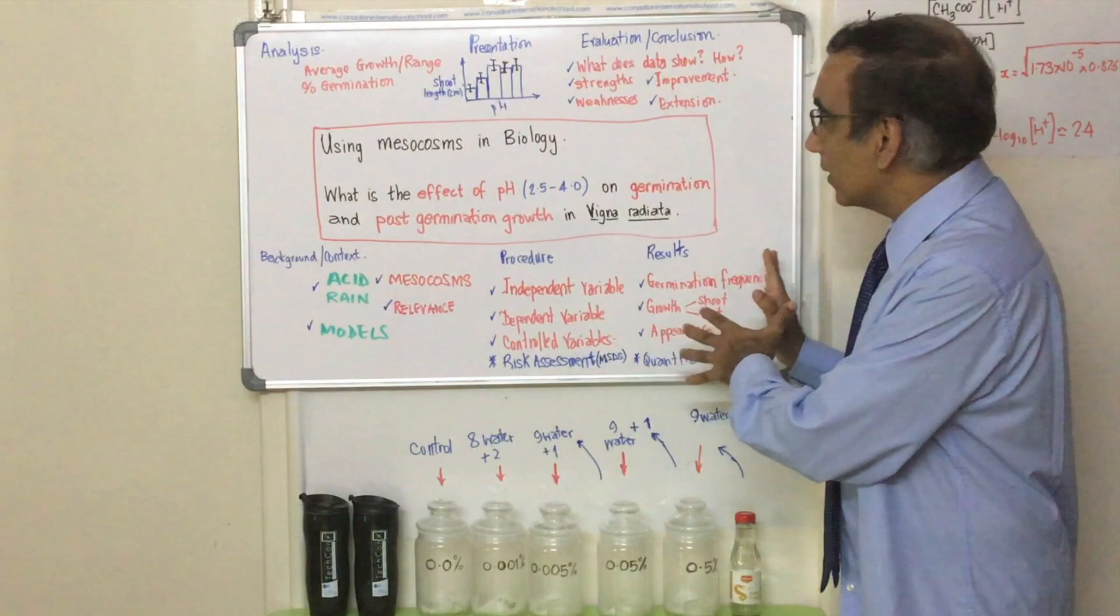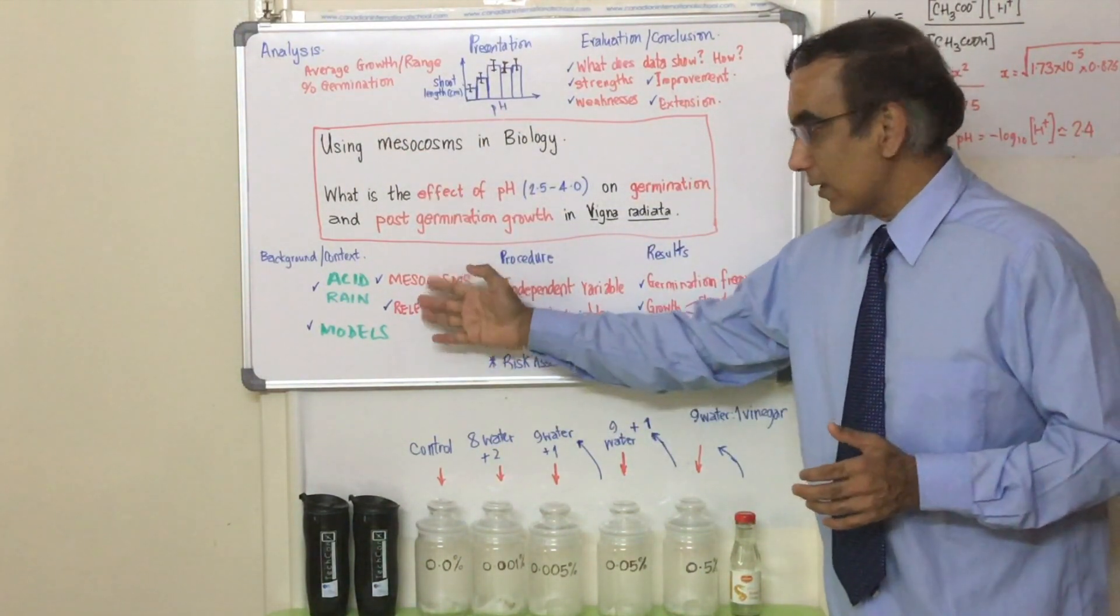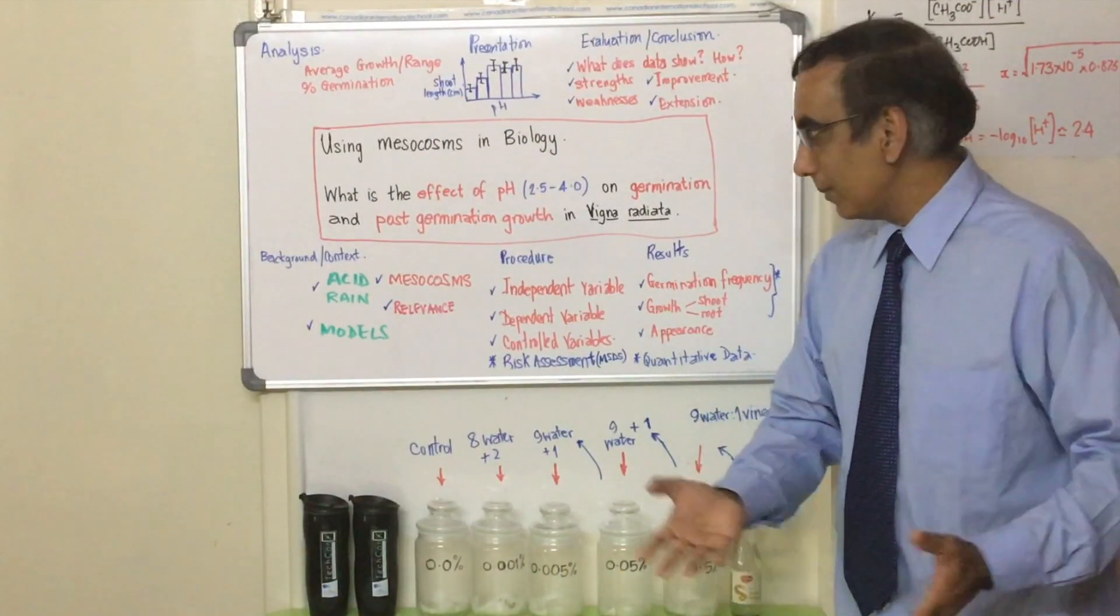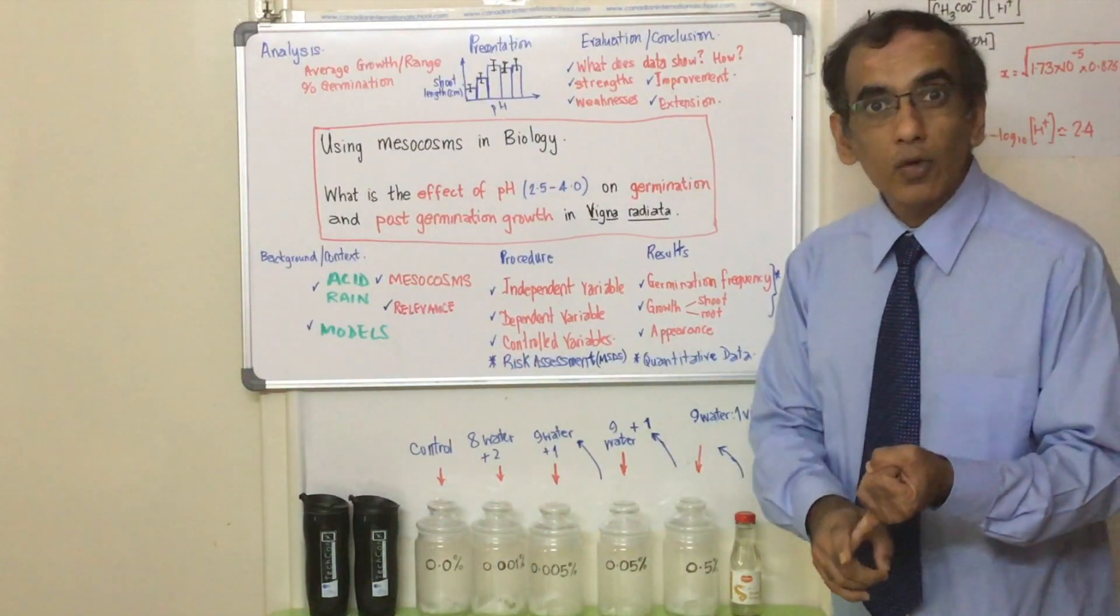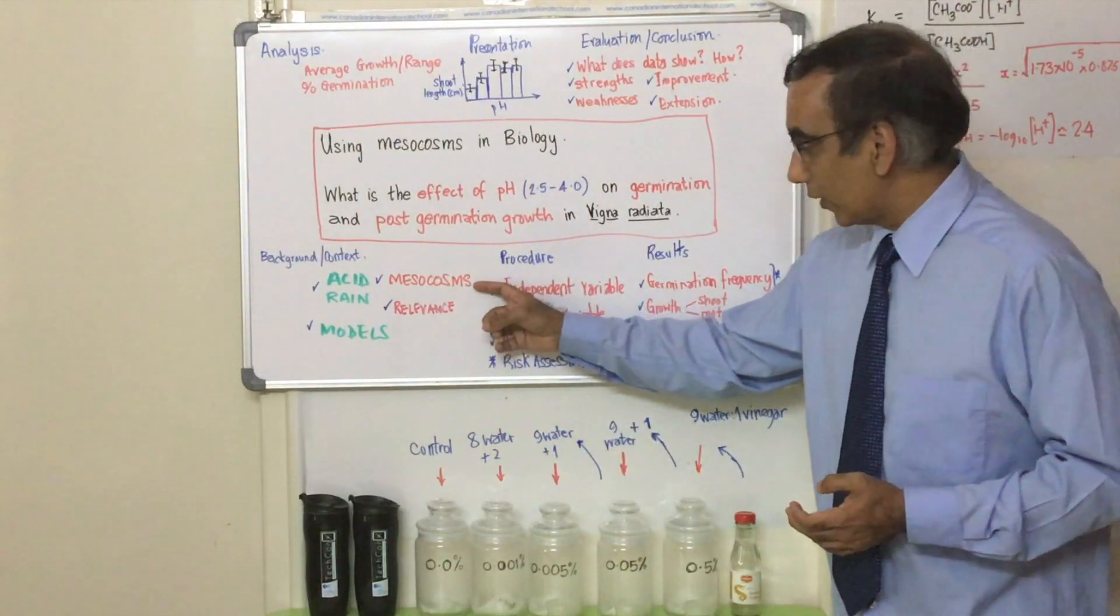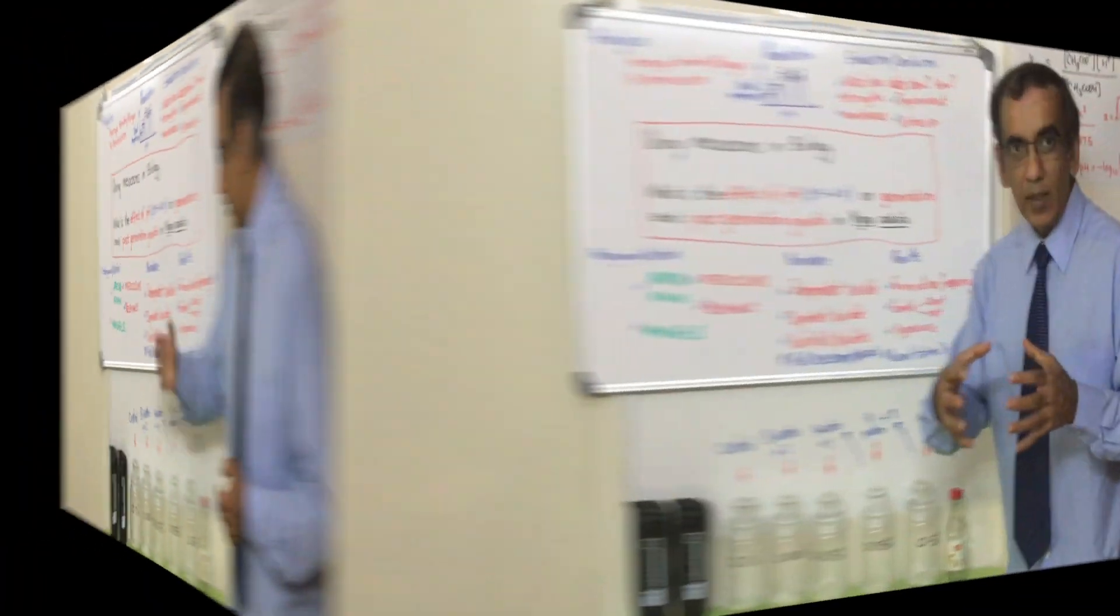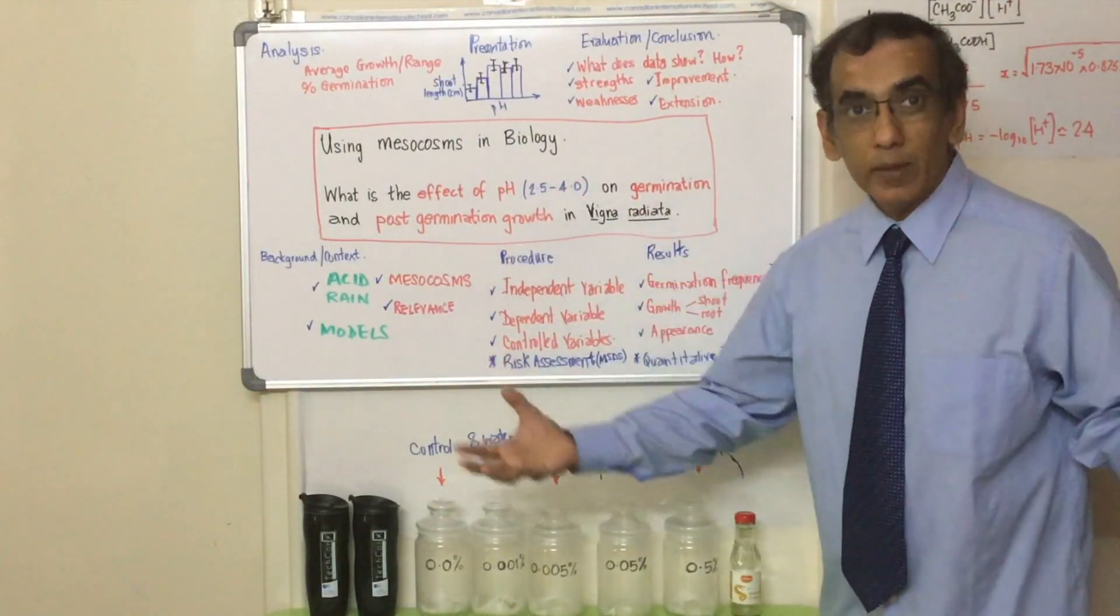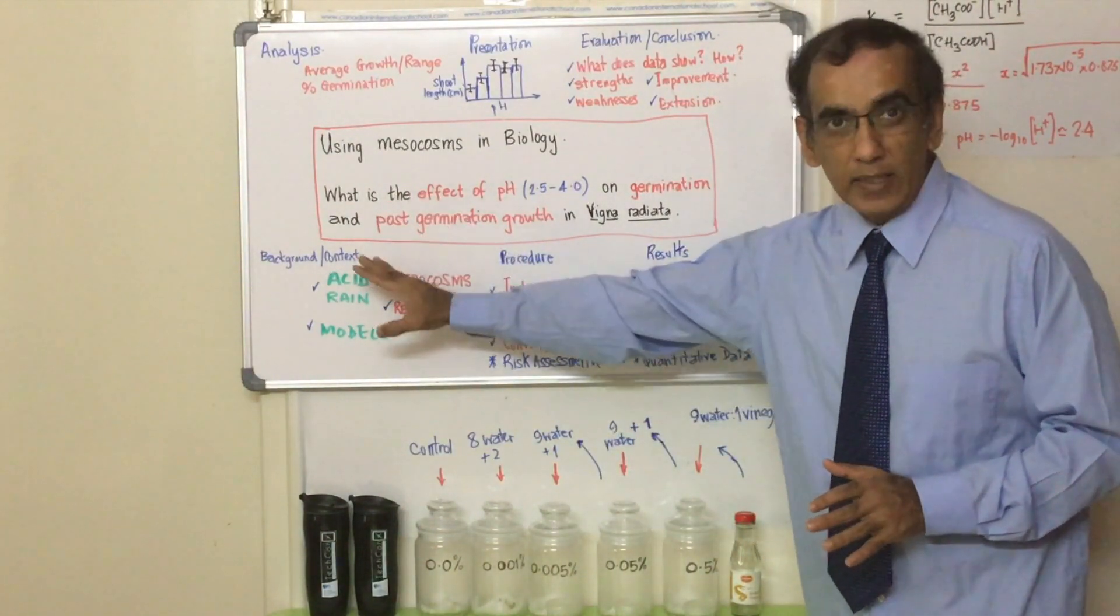So all of that will be laid out nicely in this report which begins from setting some kind of context. What's the relevance of doing this kind of study? Well, it relates to the effect of acid rain on crop growth, the effect of acidity in soil. It shows an application of the concept of the mesocosm from topic five in IB biology. It's really a model experiment to understand something much bigger that happens in the environment. So all of this is the background or the context.